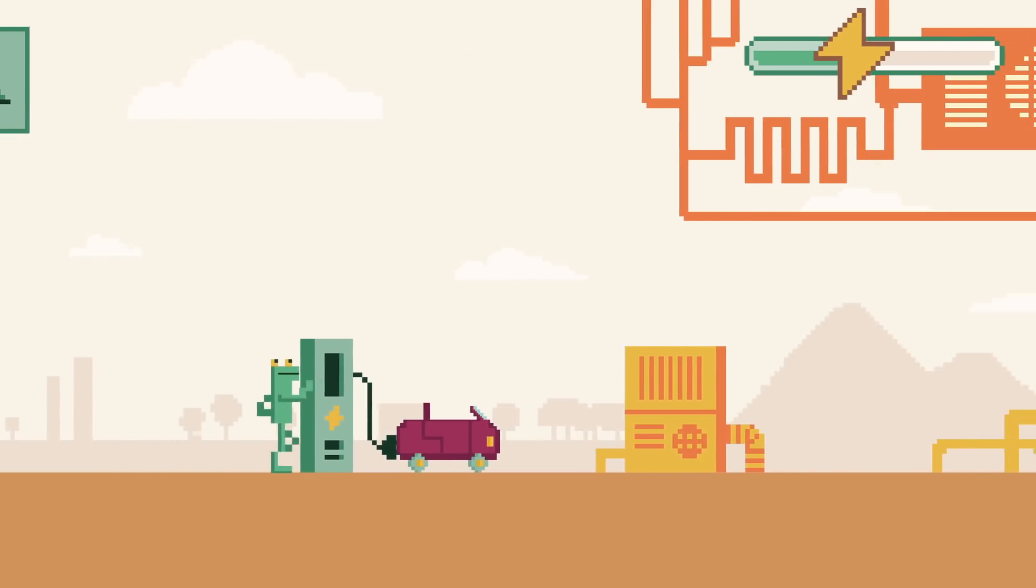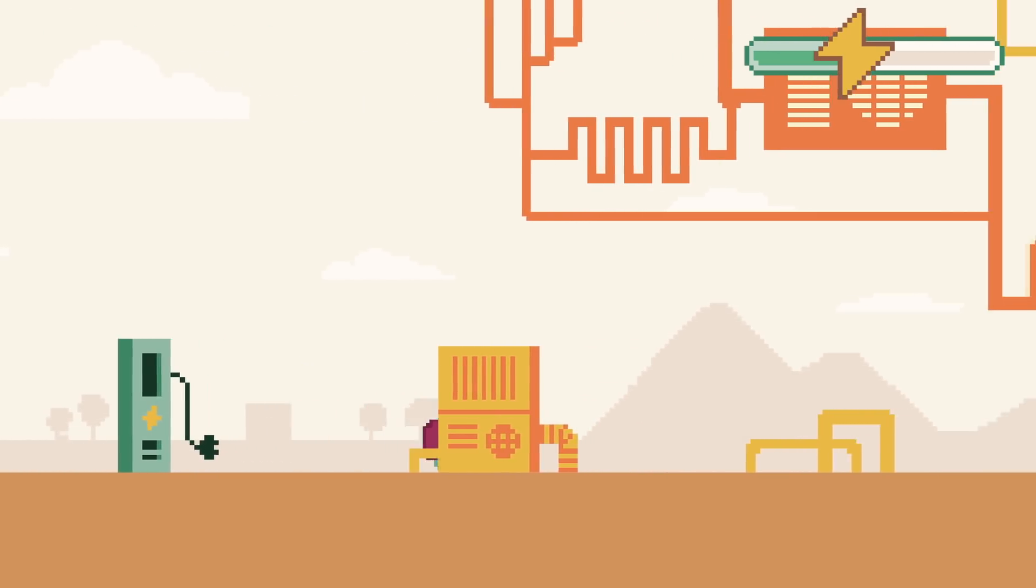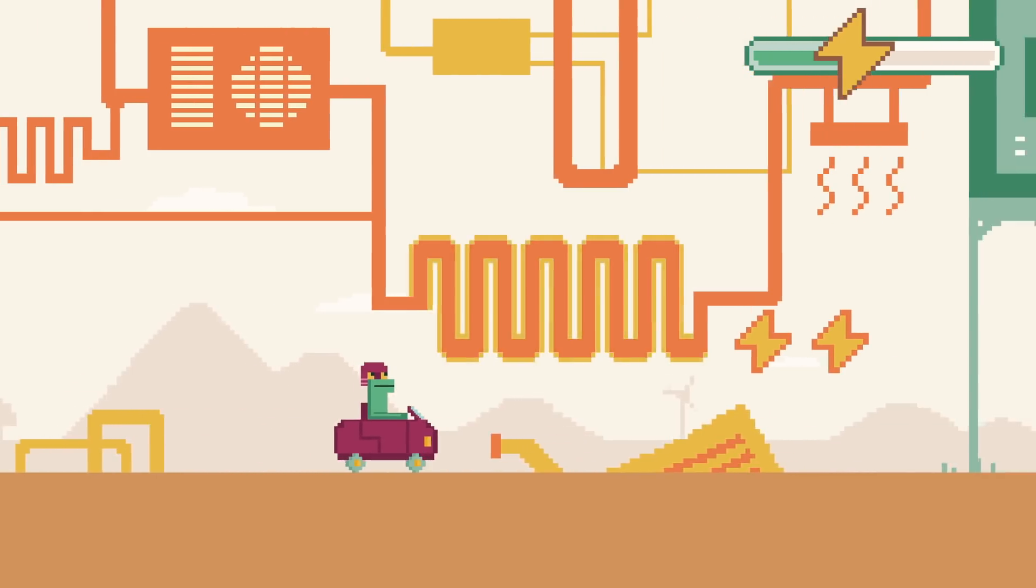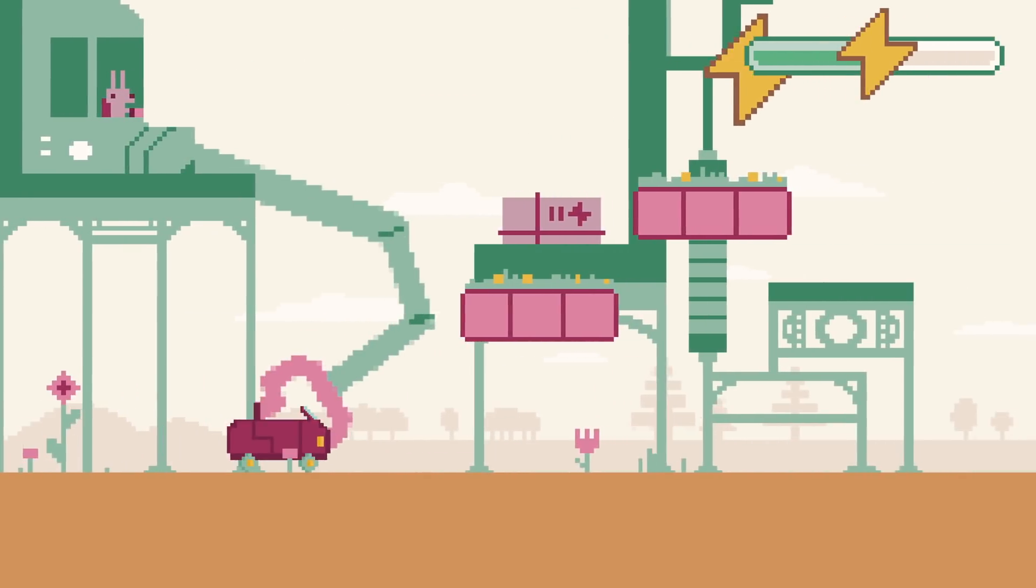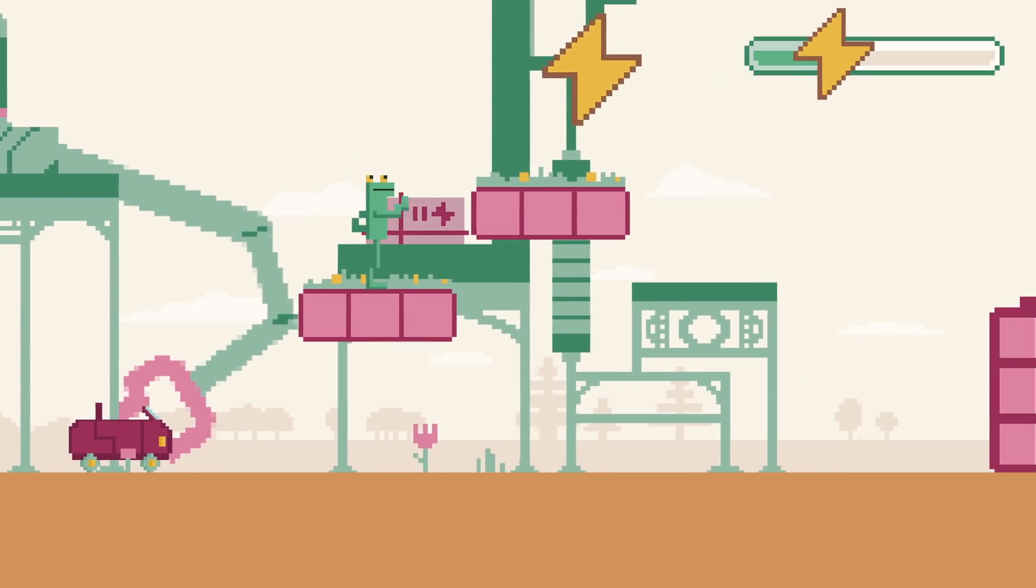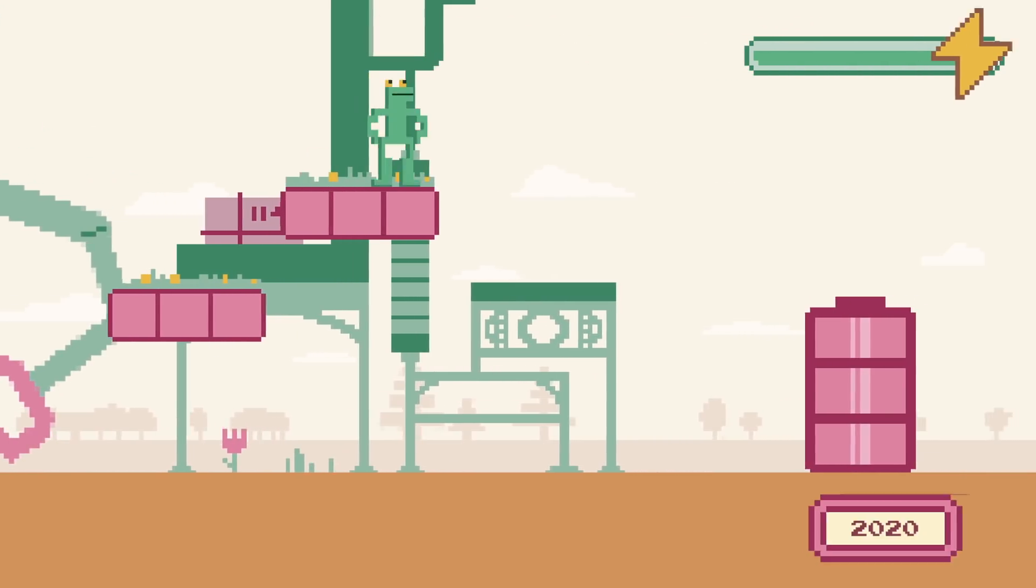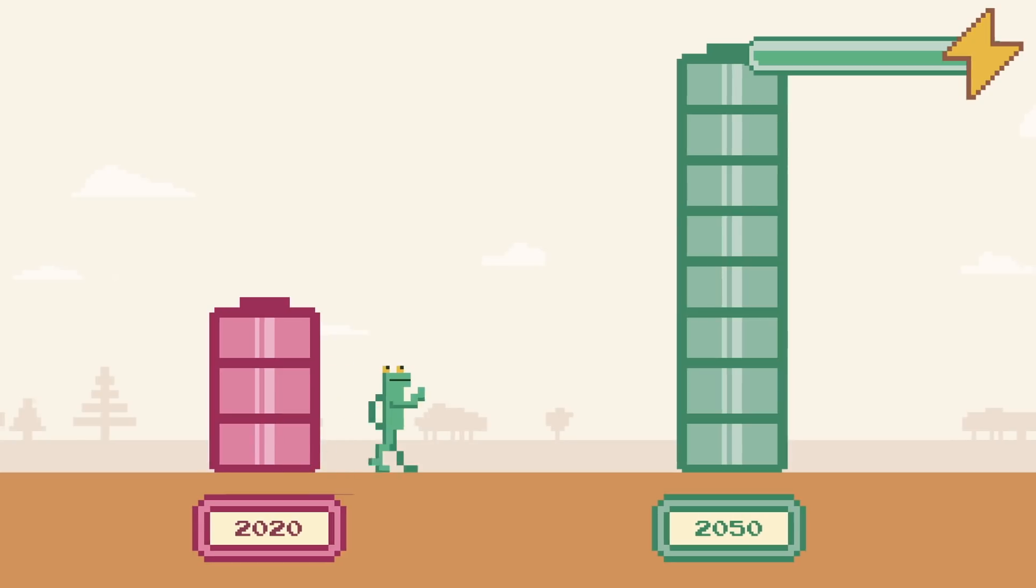We'll need to electrify cars, switch buildings heated by natural gas furnaces to electric heat pumps, and electrify the huge amount of heat used in industrial processes. So all told, global electricity needs could triple by 2050.